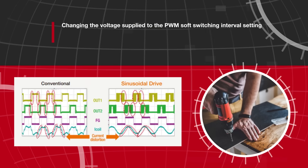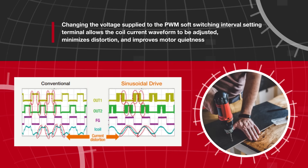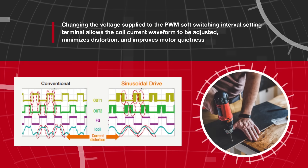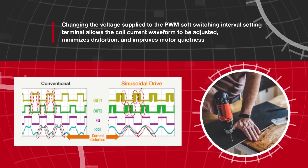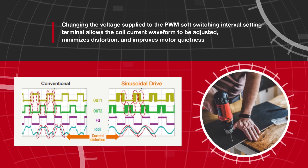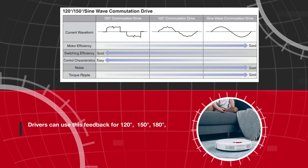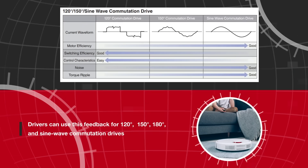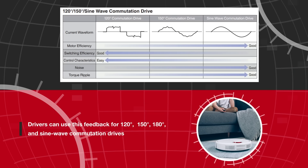In a brushless motor drive, Hall signals are used to generate PWM soft-switching waveforms while the PWM is driven through the input control signal. The Hall elements in brushless DC motors also provide feedback on the position of the rotor.